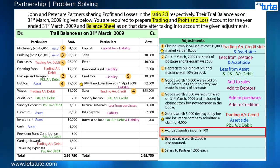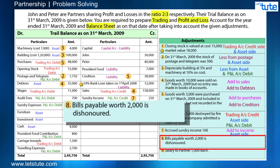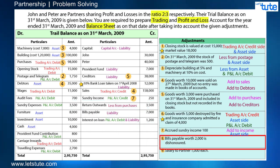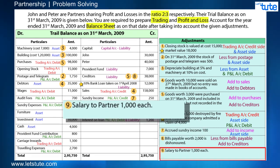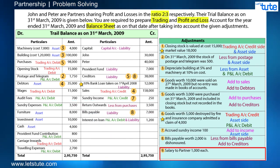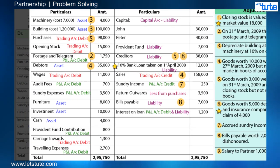Next: accrued sundry income — this is outstanding income, so effects are add to sundry income and since it is receivable, asset side. Then bills payable worth 2,000 is dishonored — first deduct it from bills payable since it is dishonored, and second effect is add to creditors because by that amount creditors will increase. Finally, salary to partner 1,000 each — this is an expense for the firm, so first effect is P&L debit, and it will be added to the partners' capital accounts since it is income for them.